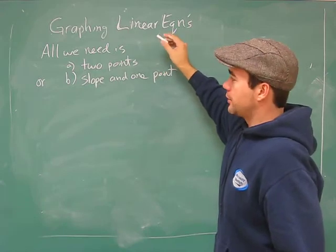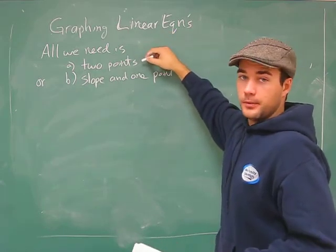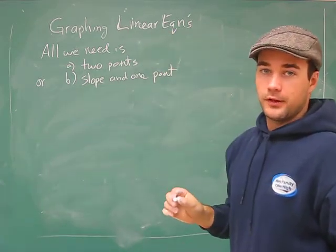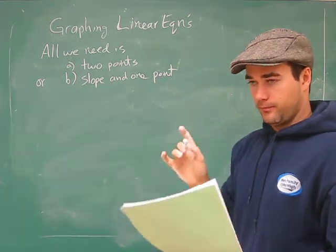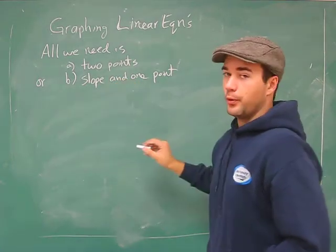In order to graph a function, all we need is either two points from it, and I showed you in the last video you can get two points by doing the x and y intercept, that's a piece of cake, or have the slope and one point.